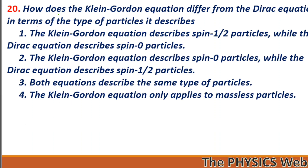Next: how does the Klein-Gordon equation differ from the Dirac equation in terms of the type of particle it describes? The Klein-Gordon equation describes spin-zero particles while the Dirac equation describes spin-half particles. So, two is your correct option.